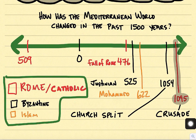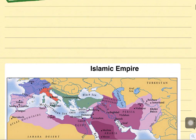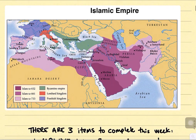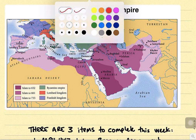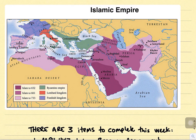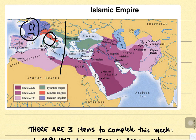We're actually going to pick up with the Crusades more when we talk about the Middle Ages. For now, let me show you this map. We can see Rome over here, and eventually with the fall of Rome the Middle Ages will begin — feudalism, chaos, decentralized government.